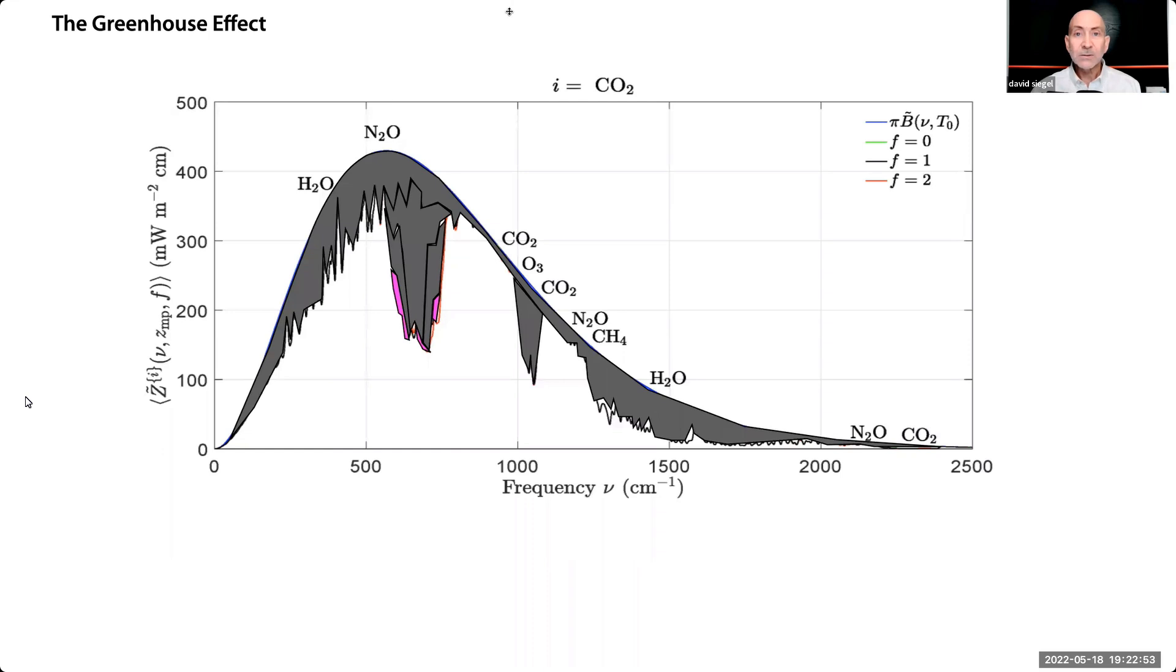And what about methane? Molecule for molecule, methane is 30 times more potent than CO2. Right now, there are about 1.8 parts per million of methane at ground level. So let's add that in. I made it red so you could see it.